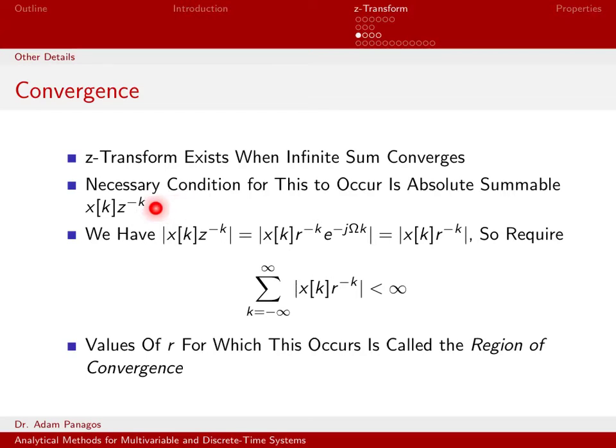Let's think about what does it mean for x of k times z to the negative k to be absolutely summable. So let's actually take the absolute value of x of k times z to the minus k.